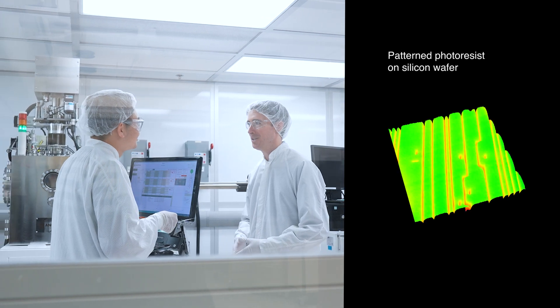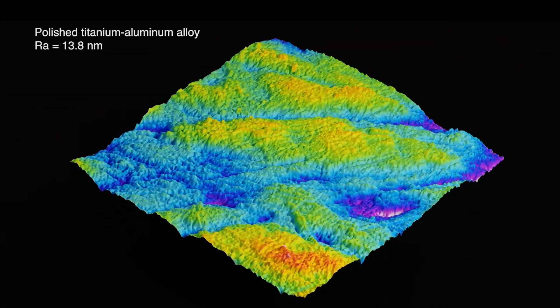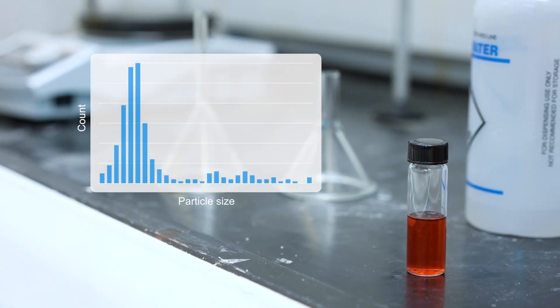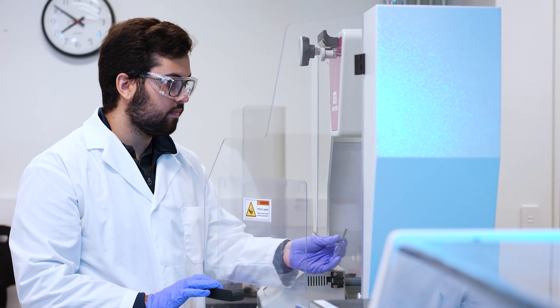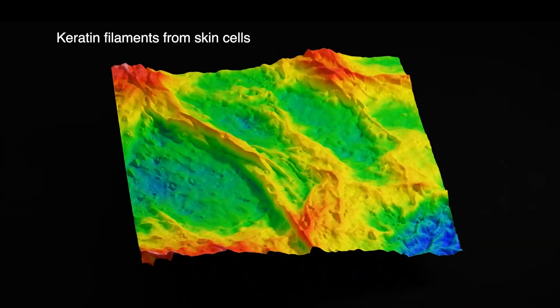The Redux AFM is versatile. Collect critical dimensions of microfabricated structures. Verify the step height of a thin film. Determine the roughness of a polished optical surface. Measure particle size and distribution. Distinguish between components with different properties and a composite. Evaluate the morphology of dried biological specimens.